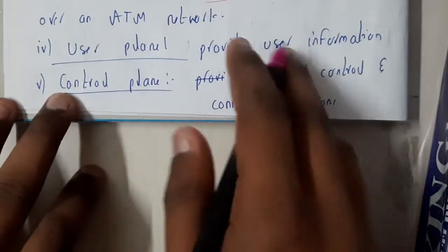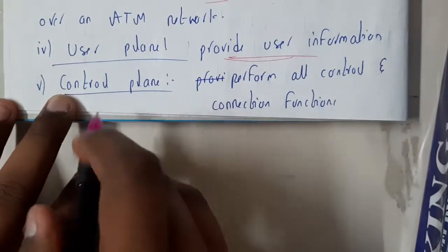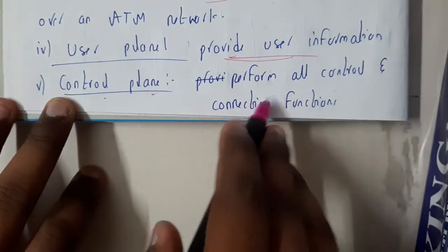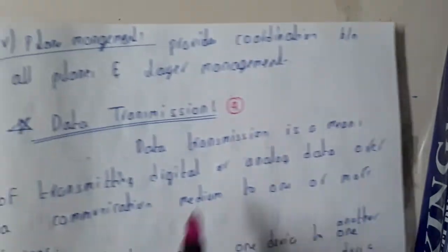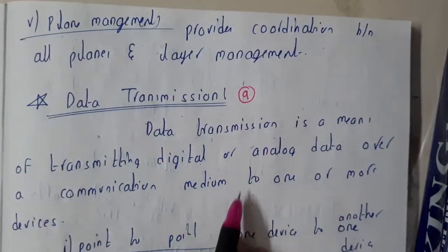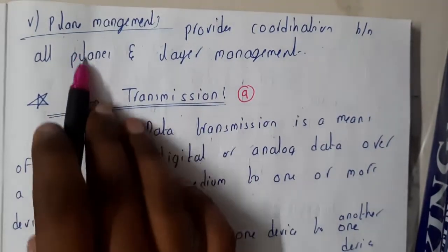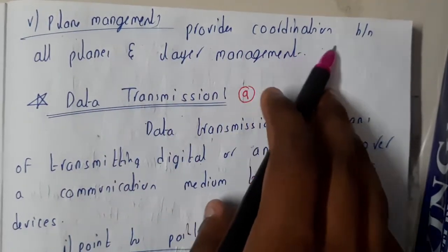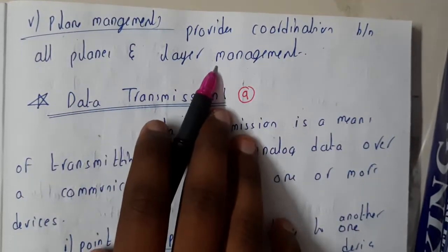Above we have the user panel, which provides information about the particular user. The control panel performs all control functions. The last layer is the plane manager, which provides coordination between all the planes and layers of management.